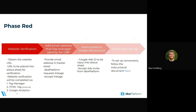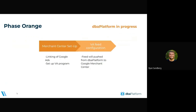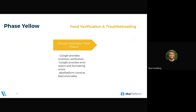Here's Phase Red in a little more detail. We need website verification to happen — HTML tag, Tag Manager, or Analytics. We need to get access to the Google Business page, access to your Google Ads account, and we need to make sure that conversions are set up. Once all of that happens, we move into Phase Orange, where DBA platform is going to be in progress — setting up the Merchant Center, making sure everything's linked with what you provided in Phase Red. Then we go into Phase Yellow, which is feed verification and troubleshooting. This is where Google checks the feed. If the feed is good, we move into Phase Blue. If there are errors or an issue with Cars for Sale, it could delay the process, but this is where we troubleshoot and find out.